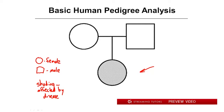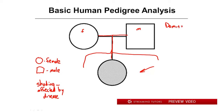Let's state what we're looking at: a female and a male that got together. When you have a line going between two people and then a drop down from them, that always means they had a child. If they had more than one child you would see this expanded out, but let's keep it simple at the beginning. So we have two choices here: either this trait is inherited in the dominant fashion or it's inherited in a recessive fashion. Simple enough, but how can we figure it out?